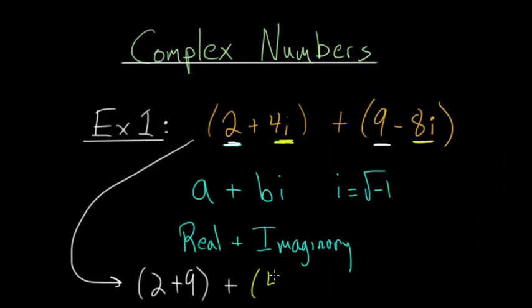and we have 4i and then minus 8i. And simplifying everything, we have 11 for the real part, and we have minus 4i for the imaginary part.